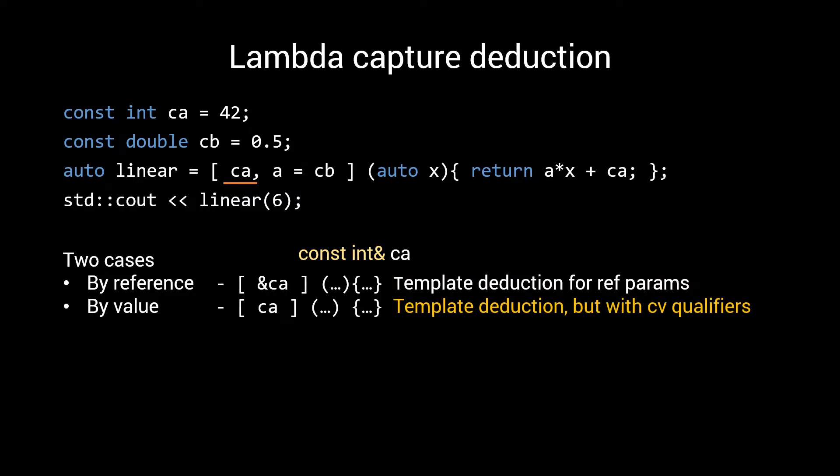When capturing by value, we also use template deduction rules. But here there's a twist. Where the deduction rules for value template deductions state to ignore const and volatile qualifiers, here they are maintained. Meaning that in this case, both our expression and our deduced type for CA are const int.